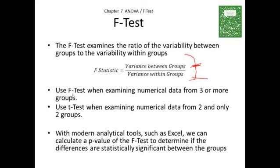The f-test is what you use when looking at numerical data from three or more groups. When we did the t-test, we were only looking at two samples — the t-test is appropriate to use with two and only two groups. But when you have three or more groups, it's usually best to use the f-test, which looks at how the variance between the groups is related to the variance within individual groups.